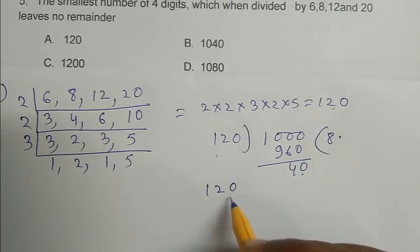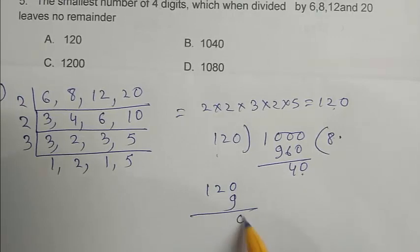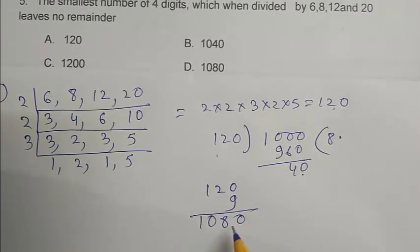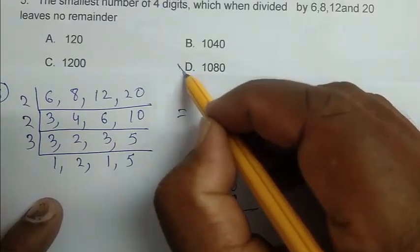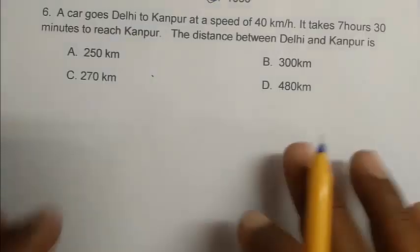We have to add 1 with this quotient and multiply with 120. So answer is 120 into 9, 0, 8, 1, 0. So D is the right answer.